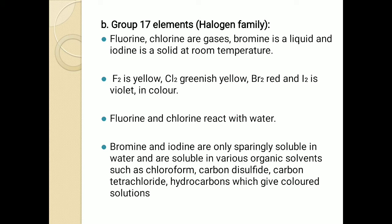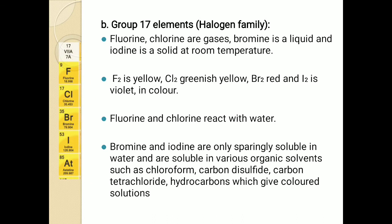Now the next group — group 17 — which is the halogen family. Their physical properties: in the 17th group, the first two members, fluorine and chlorine, are gases. Bromine is a liquid and iodine is solid at room temperature.